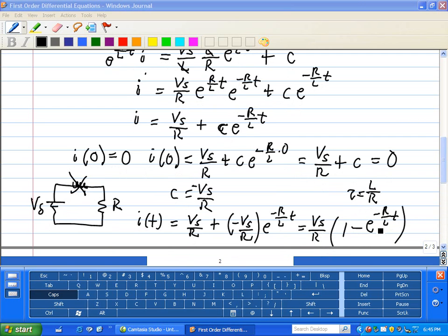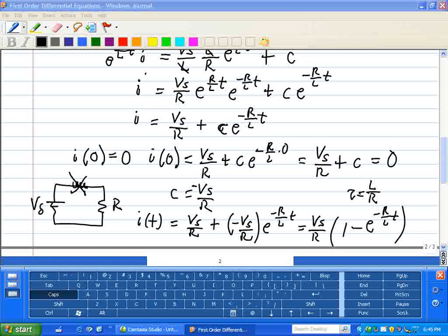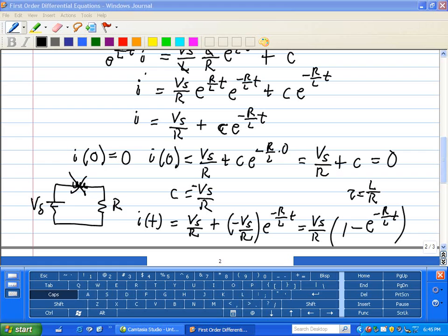But the point is that these RL components can be used to develop timing circuitry because of this time constant formulation given as L over R. So R and L can be added to external components to a circuit to form timing functions within a particular application.